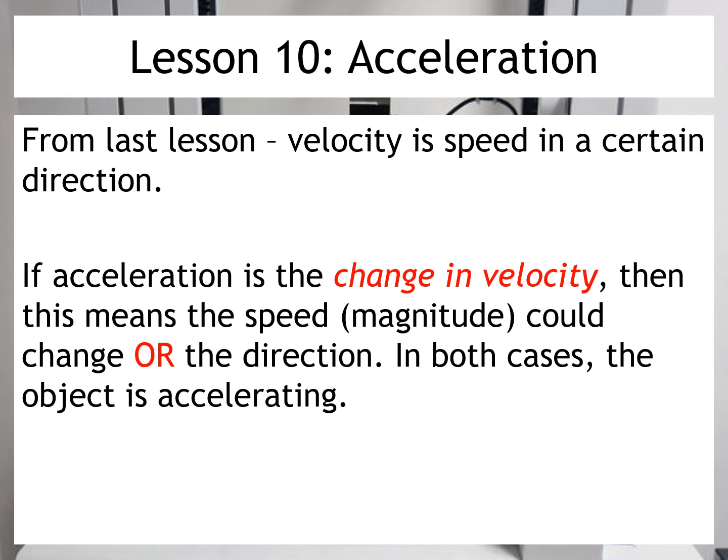For example, if an object is going round in a circle, it may be travelling at a constant speed. But because it's continually changing direction, it would also be accelerating.